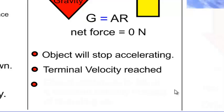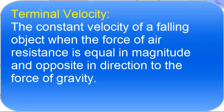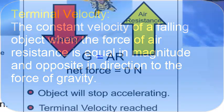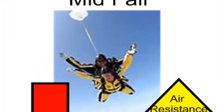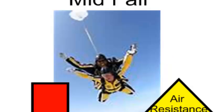Terminal velocity is defined as the constant velocity of a falling object when the force of air resistance is equal in magnitude and opposite in direction to the force of gravity. When both arrows — the air resistance and gravity — are equal, that's how you know terminal velocity has been reached. A skydiver can look at her accelerometer, usually around her waist, and see that her velocity needle stays at a constant speed — that's how she knows she's reached terminal velocity.